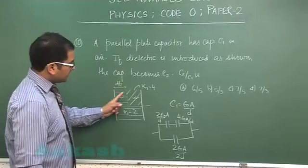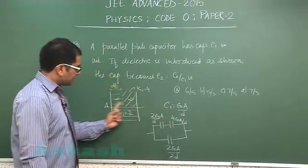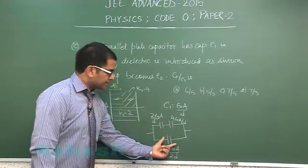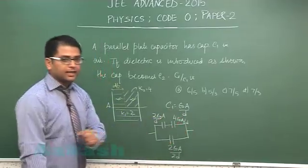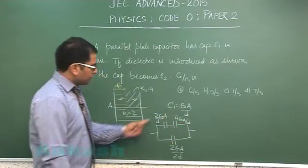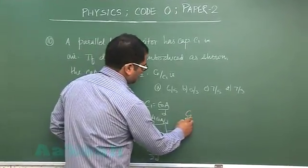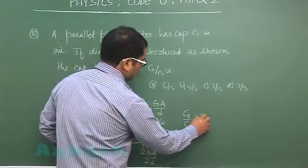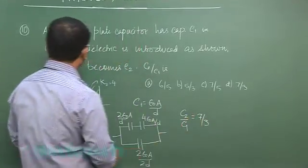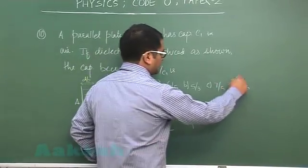So in this way these two are in series. This is one that is a case and this block and this block they are in parallel. When you calculate this and you find C2 and when you do C2 by C1 you would get 7 by 3. So question number 10 will lead us to option number D.